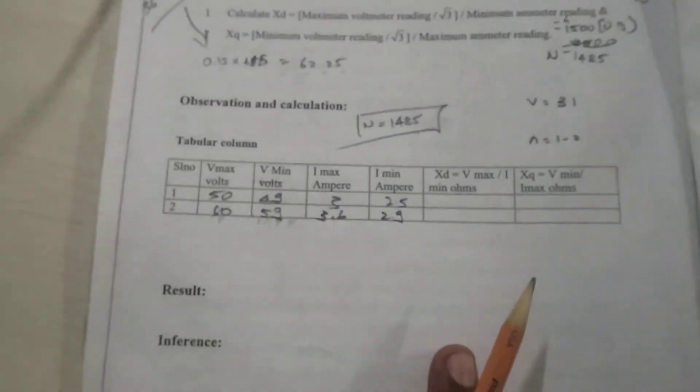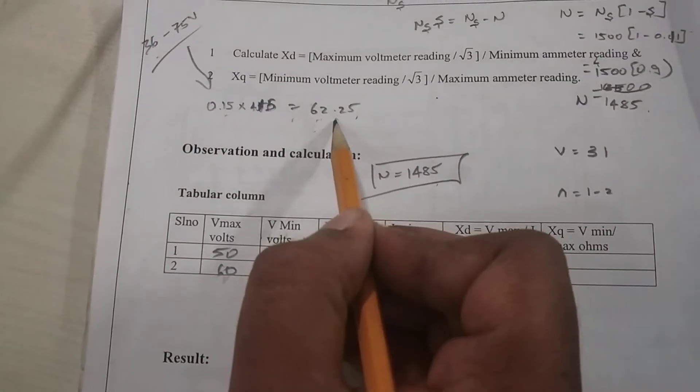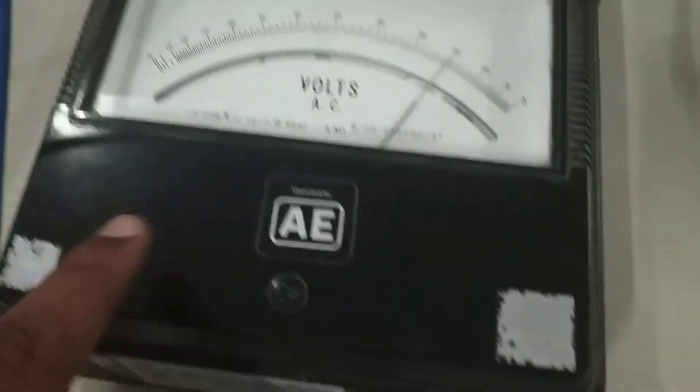Now a reading is taken. Single reading is enough for the examination. A reading is taken based on the maximum and minimum readings of the voltmeter and the ammeter.